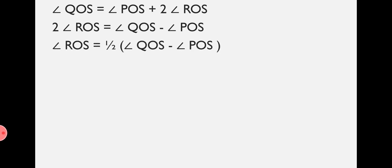For further solving, 2 times Angle ROS equals Angle QOS minus Angle POS. We transpose Angle POS to the left-hand side, so plus becomes minus. Therefore, Angle ROS equals half of (Angle QOS minus Angle POS), which is what we required to prove. Hence proved.